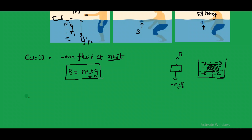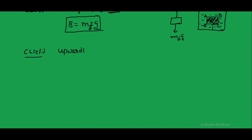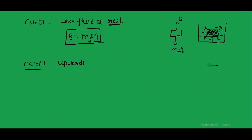Case 2: When the fluid is moving upwards. The fluid moves upward, so the body also moves upward. Weight W equals Mg acts downwards. Since the body is moving upward, there is an upward acceleration. Applying Newton's second law, Force F equals MA, so the apart force equals mass of fluid into acceleration.